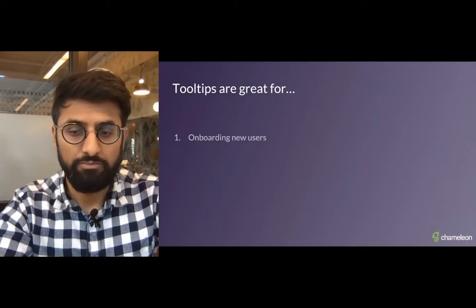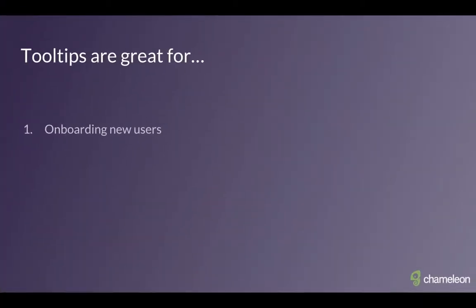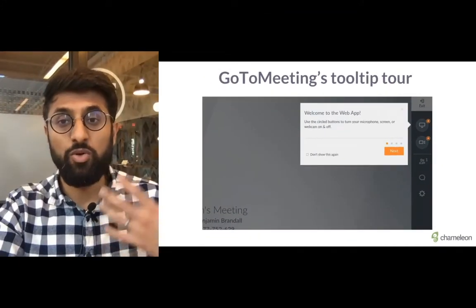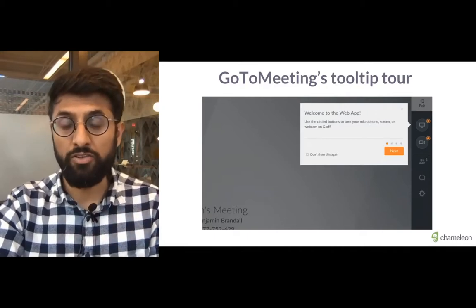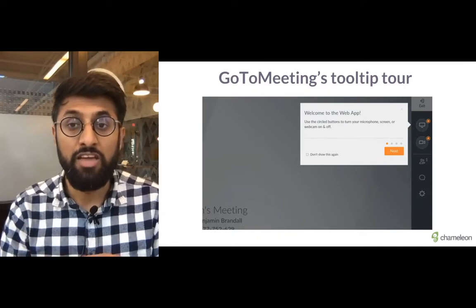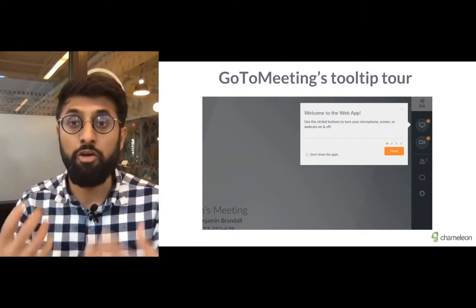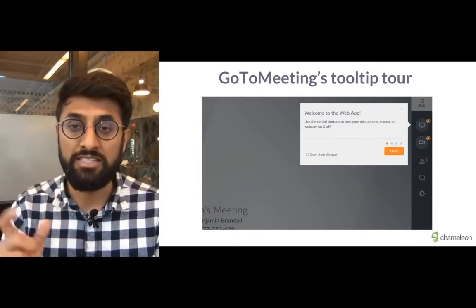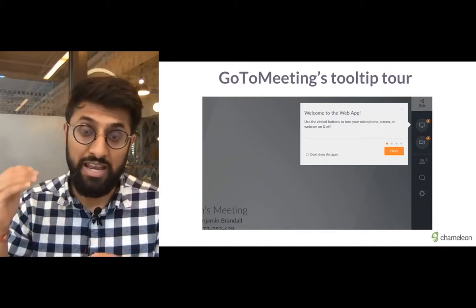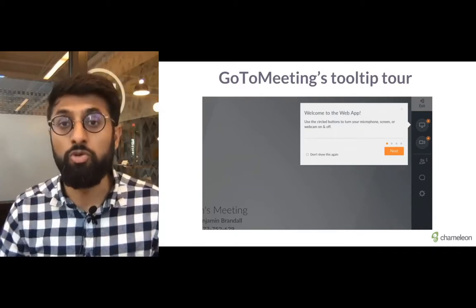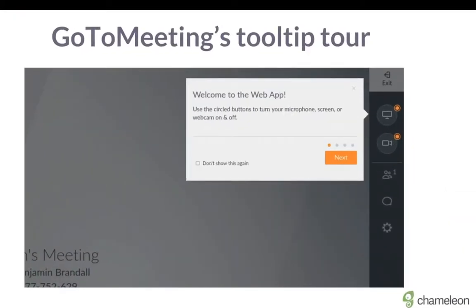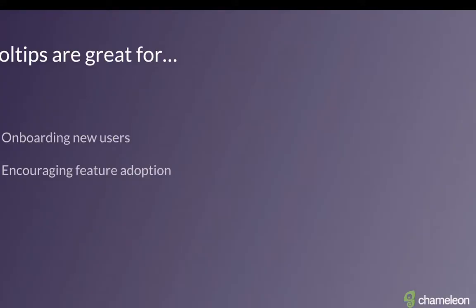Let's talk about use cases. One use case is onboarding new users — a very common and valuable use case. Here's an example from GoToMeeting. The tooltip is being used to highlight specific icons in the navigation. That's relevant because a user is coming to the app for the first time with no familiarity. The tooltip encourages familiarity and understanding of what each icon means, and points the user to the action they need to take next.